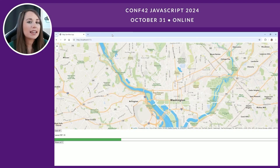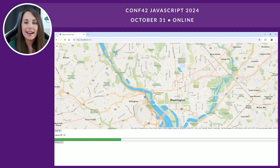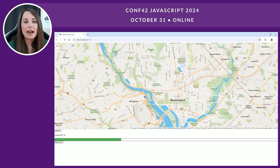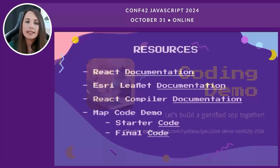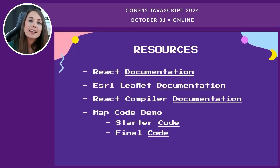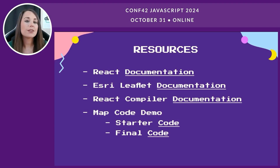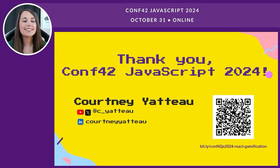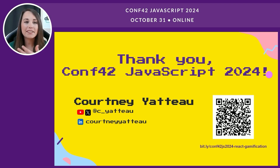We've covered the GAMES framework — adding features like XP tracking, progress bars, social sharing, and optimizing performance and state management. All of these techniques are essential as our app grows. To wrap things up, I've compiled some resources: documentation links for React, Esri Leaflet, and the React compiler, plus links to the starter and final versions of the demo code. You can access these links using the PDF version of the slides at the QR code shown. Thank you for joining — I really hope you feel inspired to add some kind of gamification into your applications. Thanks and happy coding!